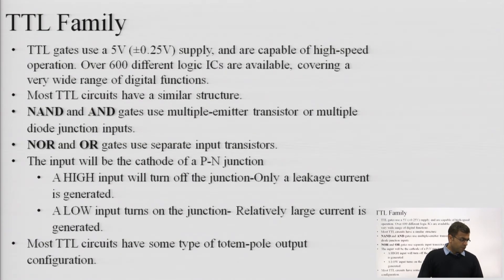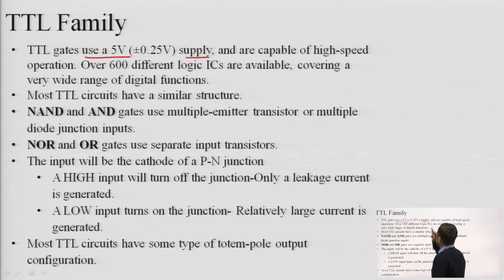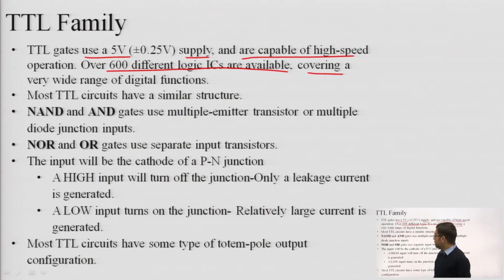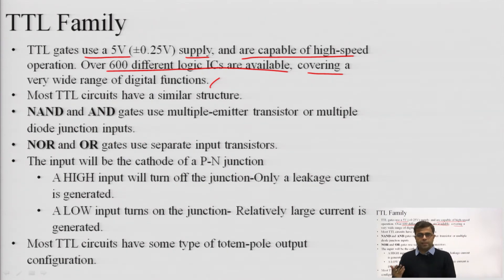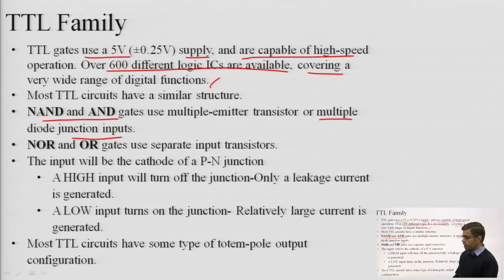These are the performance characteristics of our logic family. Now let us cover the first logic family in detail: TTL, transistor-transistor logic. This family uses a 5-volt supply, varying between 4.75 to 5.25 volts. It is capable of high speed operation, and over 600 different logic ICs are available — the most commonly used logic family. NAND and AND gates use multiple-emitter transistors, while NOR and OR gates use separate input transistors.